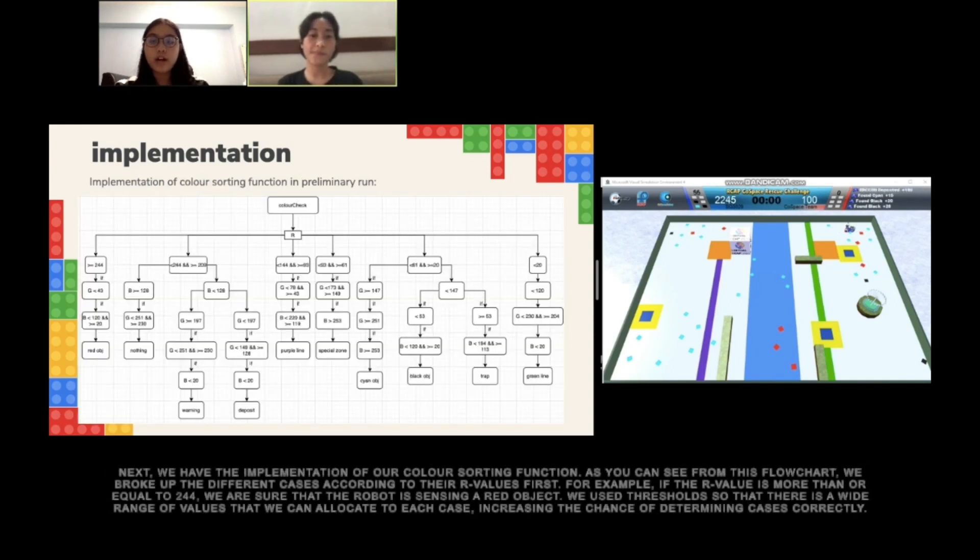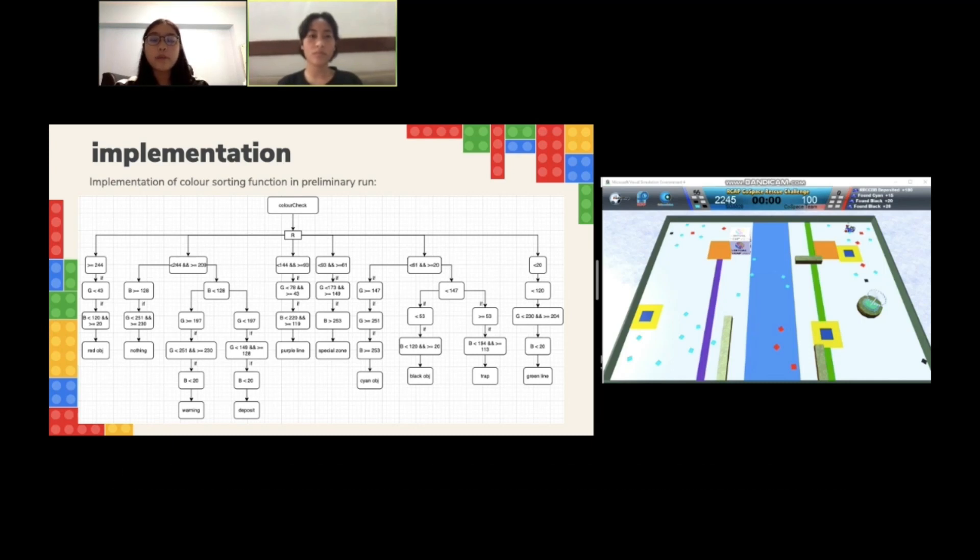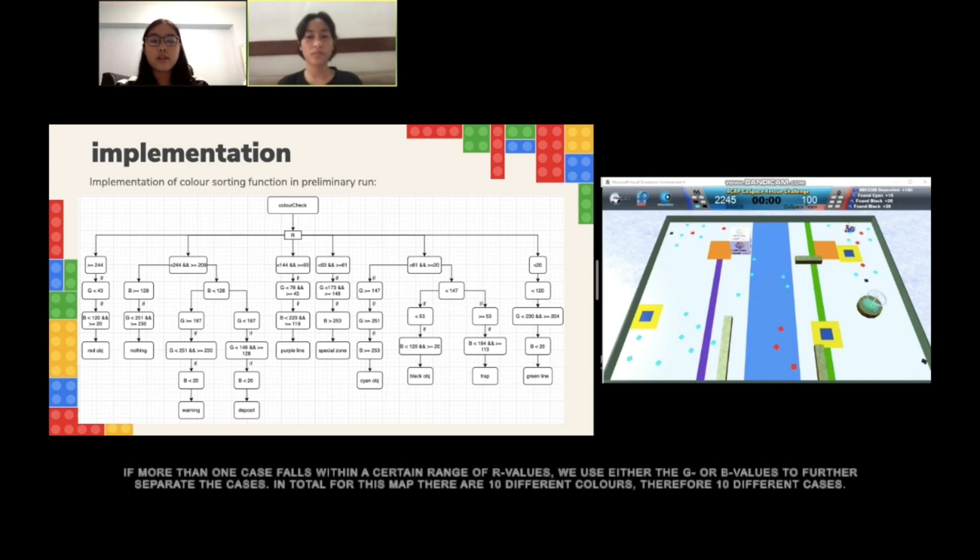Next, we have the implementation of our color sorting function. As you can see from this flowchart, we broke up the different cases according to their R values first. For example, if the R value is more than or equals to 244, we are sure that the robot is sensing a red object. We use thresholds so that there is a wide range of values that we can allocate to each case, increasing the chance of determining cases correctly. If more than one case falls within a certain value of R values, we use either the G or B values to further separate the cases. In total, for this map, there are 10 different colors, therefore 10 different cases.